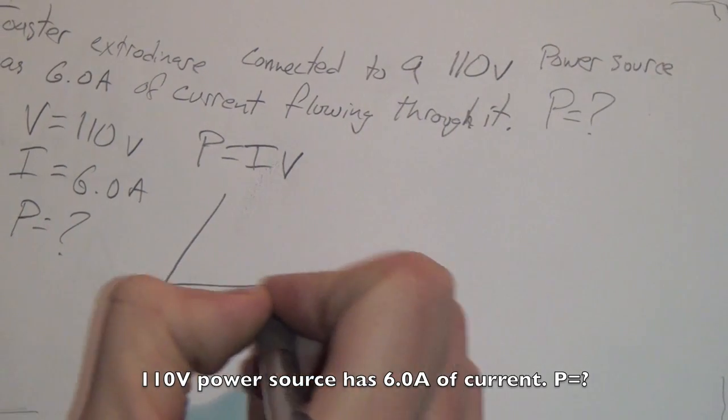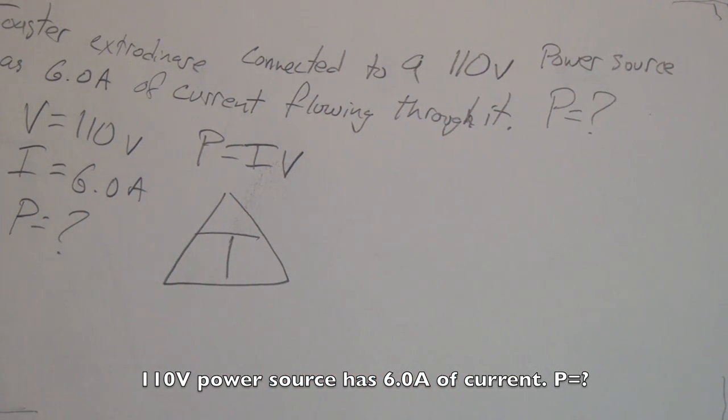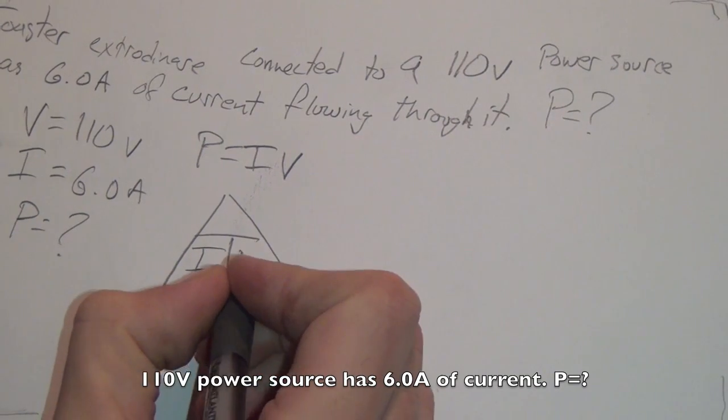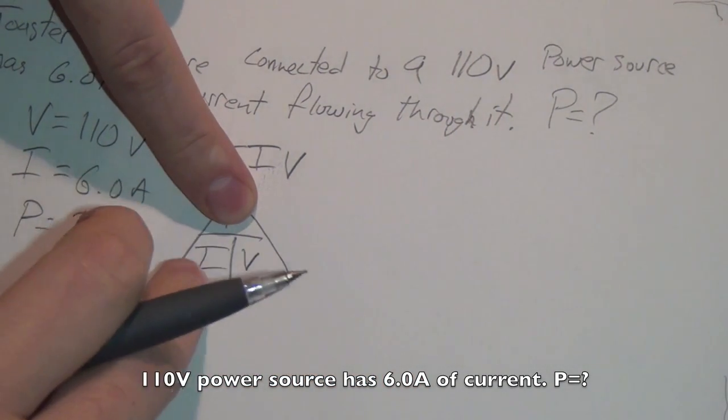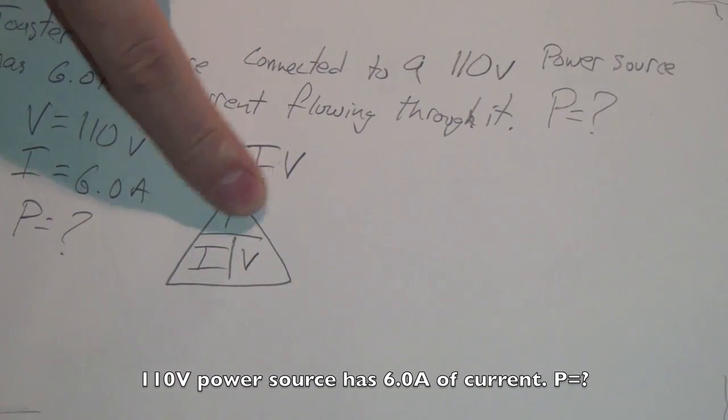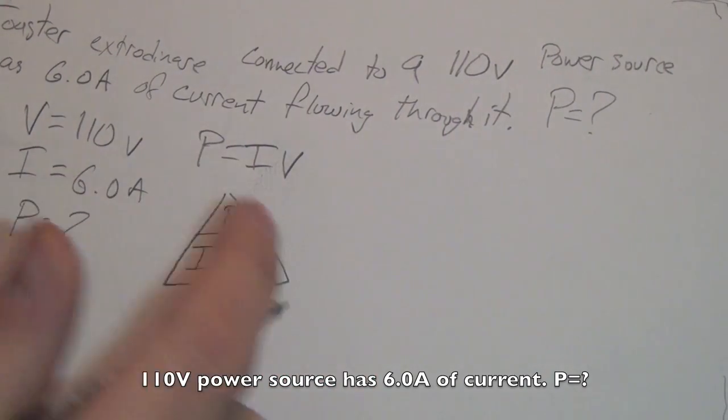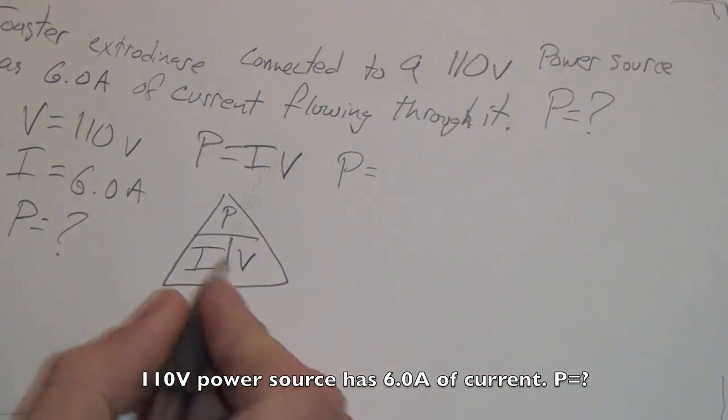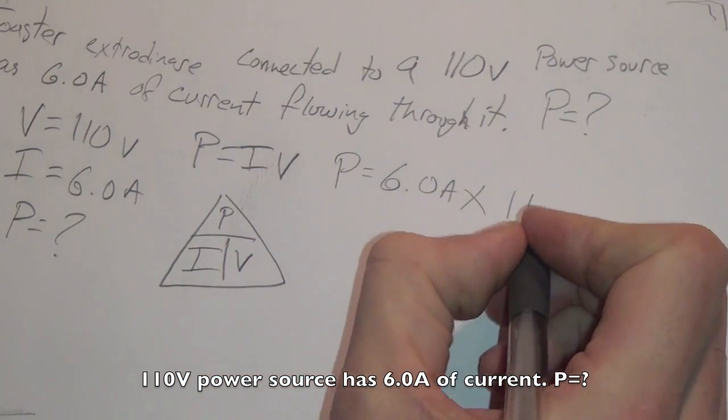We know through our formula sheet that power equals current multiplied by its power source. We can also put this into a mighty triforce of power to organize it and avoid the manipulation of formulas. While I and V are right next to each other, nothing's over top anything else. So I and V and you fill in the blanks with P. So if you're looking for power, cover power, it's current times voltage. Now we don't have to do this. We don't have to do any manipulation whatsoever. So all we have to do is plug in our formula.